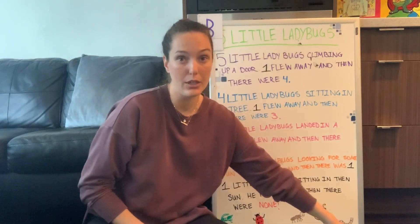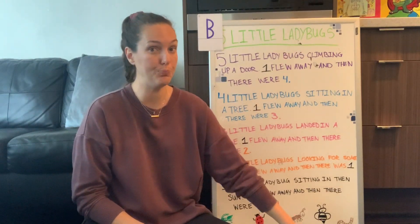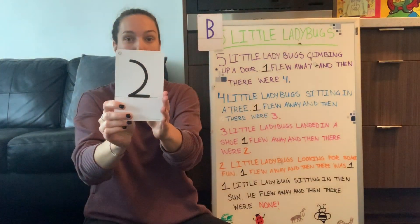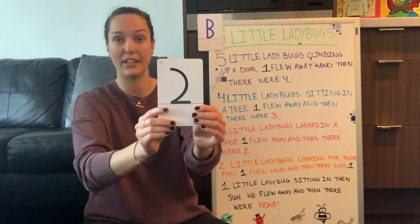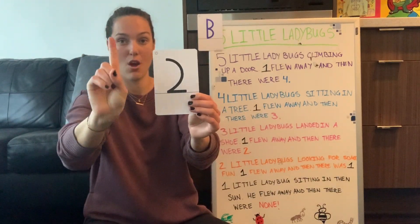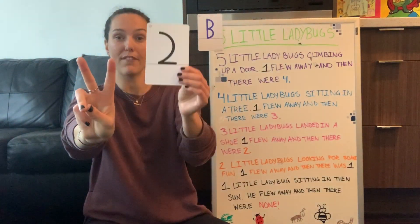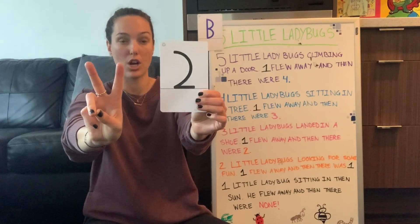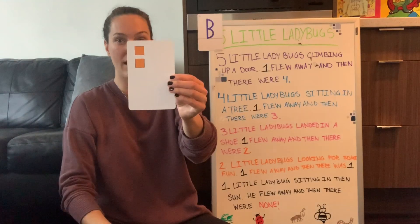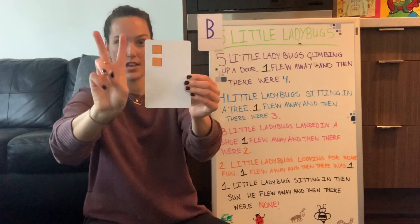For this week, we're going to do the second number in our number line. What number could that be? The number two! Can you show me two on your fingers? One, two. I have two on my fingers and my number two card. If I flip it over, we can count the blocks — one orange block, two orange blocks. The number two.